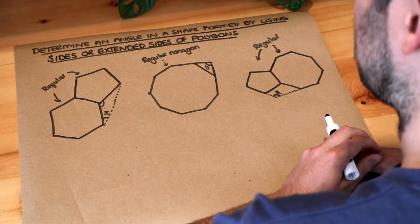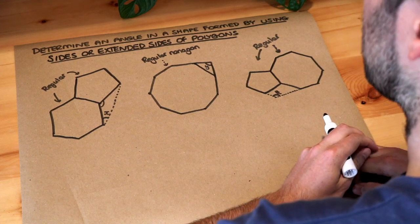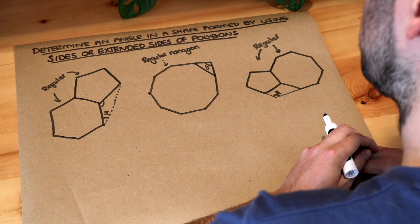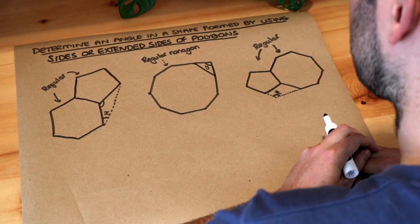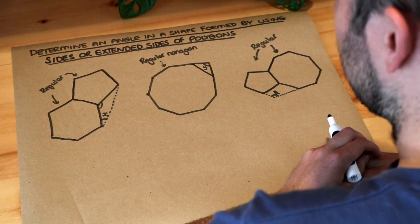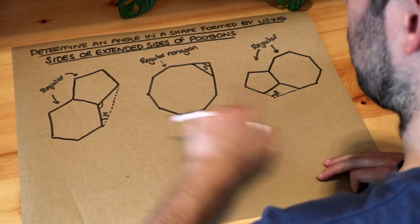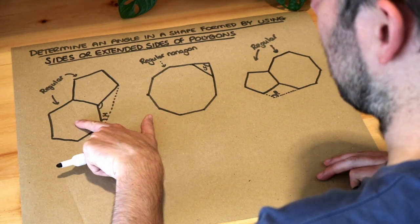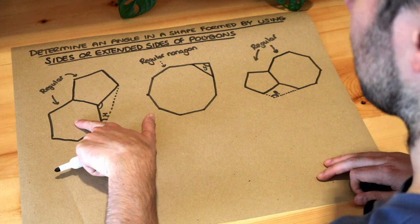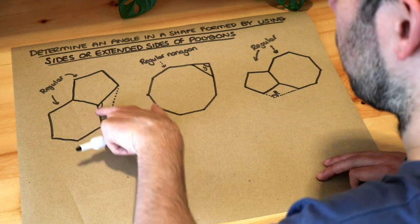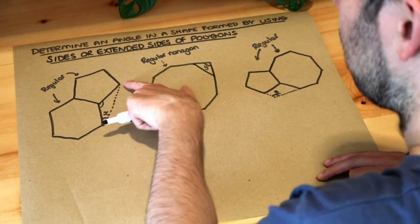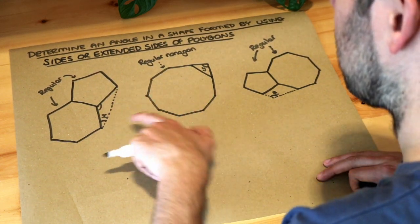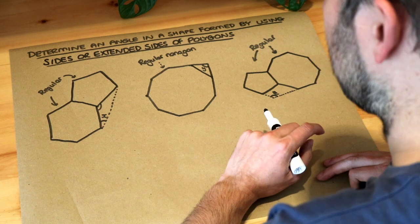Hello and welcome to this Dr Ross video on determining an angle in a shape formed by using sides or extended sides of polygons. Here for example we've got a regular pentagon (five sides), a regular hexagon (six sides), and then we've got a triangle formed by joining two corners of the polygons, and we're trying to find X.